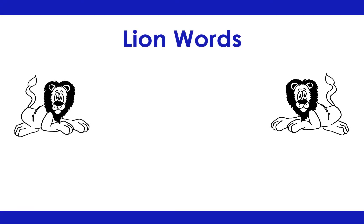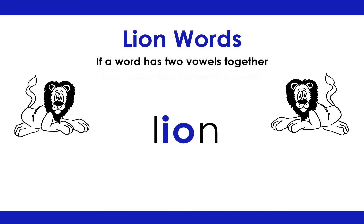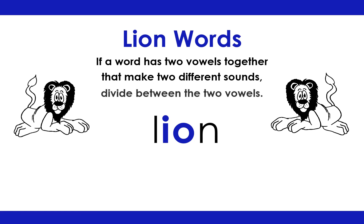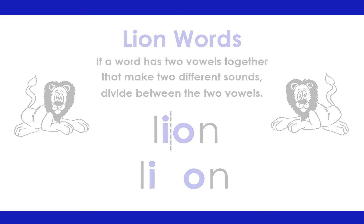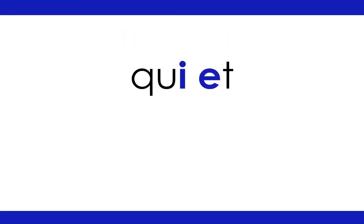Lion words. If a word has two vowels together that make two different sounds, divide between the two vowels. Lion: L-I-O-N. Practice word: Quiet.